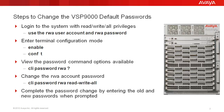In our example, we'll use the following steps to change the default passwords on the system. We'll log into the system with read-write-all privileges. We'll use the enable command followed by conf t to enter terminal configuration mode. We'll view the password command options available to us using the question mark parameter. We'll change the RWA account using the CLI password command, and finally complete the password change by entering our old and new passwords when prompted. It's worth noting that the same procedure can be used to change other user account passwords on the system.